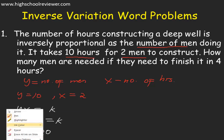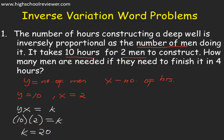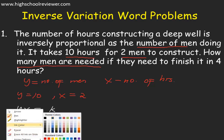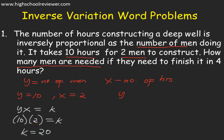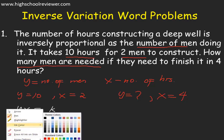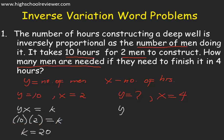We will then find the second values of Y and X. How many men are needed? The number of men, or the second value for Y, is the unknown. Our Y is unknown when X is equal to 4 hours. Using the equation Y multiplied by X equals K, our X is 4, giving us 4Y, and our constant of proportionality is 20.